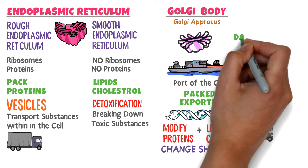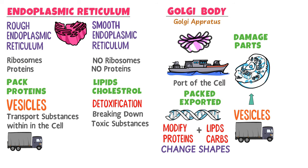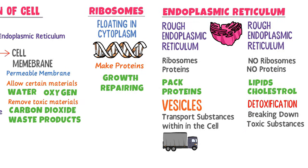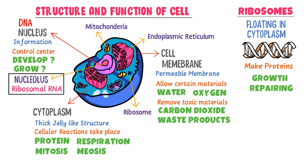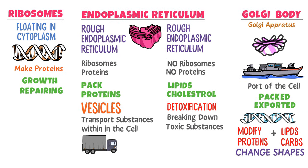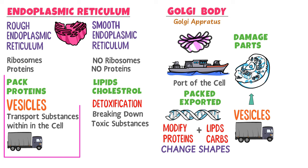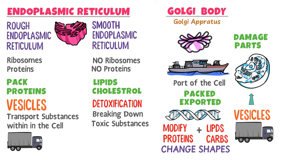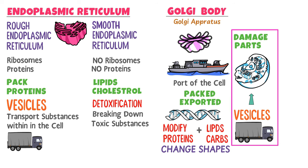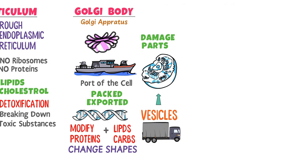For example, the Golgi body will send proteins to the damaged part of the cell for repairing by the help of vesicles. To summarize: ribosomes are formed by the nucleolus in the nucleus; ribosomes synthesize proteins; rough endoplasmic reticulum picks up the proteins in vesicles and transports them to the Golgi body; Golgi body provides a specific shape and prepares the protein for a specific task; and finally, Golgi body sends it to the targeted destination to perform its function.